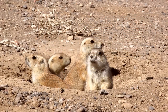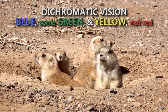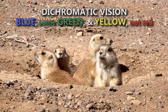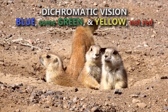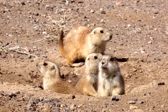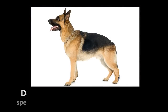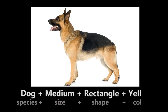Like many mammals, prairie dogs have dichromatic vision, which means that they can see blue, some green, and yellow, but not red. Using experiments in the field and in the laboratory, we have found that prairie dogs can also describe the size, shape, and coat color of domestic dogs.